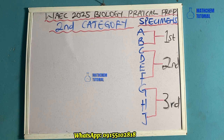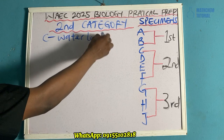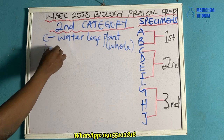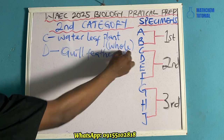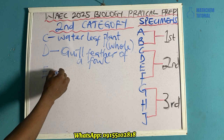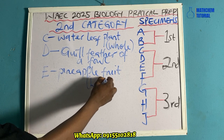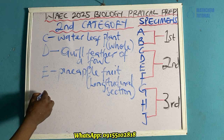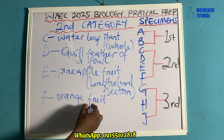Specimen C is the water leaf plant — the whole water leaf plant. Specimen D is the queen feather of a fowl. Specimen E is the pineapple fruit, longitudinal section. Specimen F is the orange fruit, and this one is the transverse section.